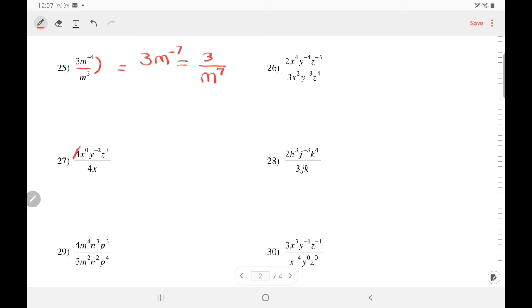In number 27, we will cancel out the 4's. X to the 0 is 1. So let's rearrange things. X has no other X to combine with, it's staying put. Y has a negative exponent, so Y is moving under. And once it moved, it is now positive. And Z is happily positive, so it stays exactly where it is.